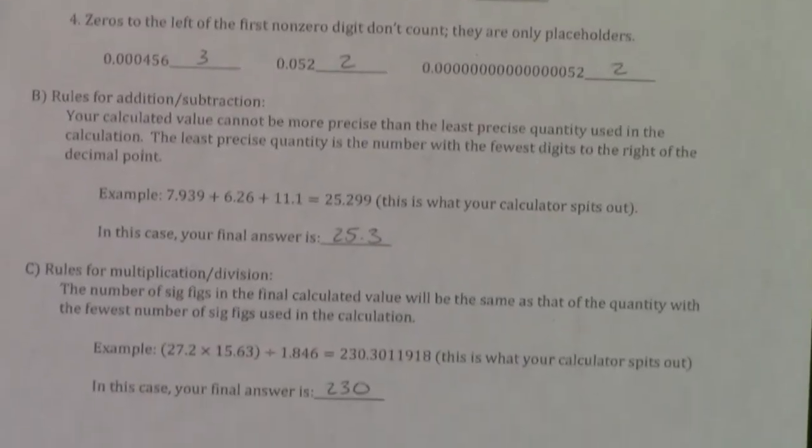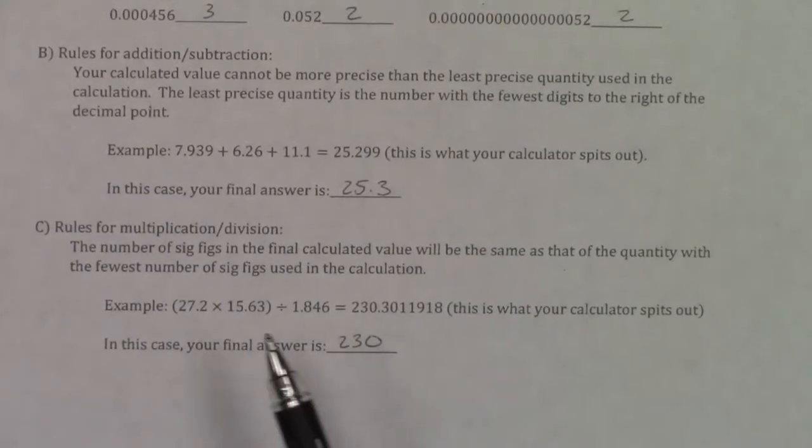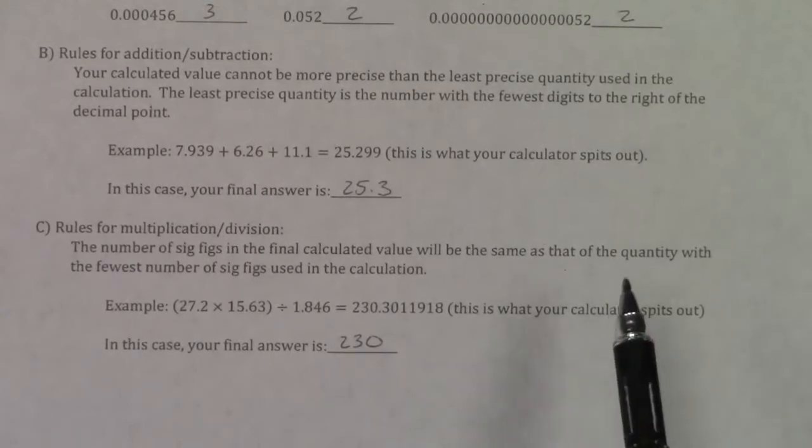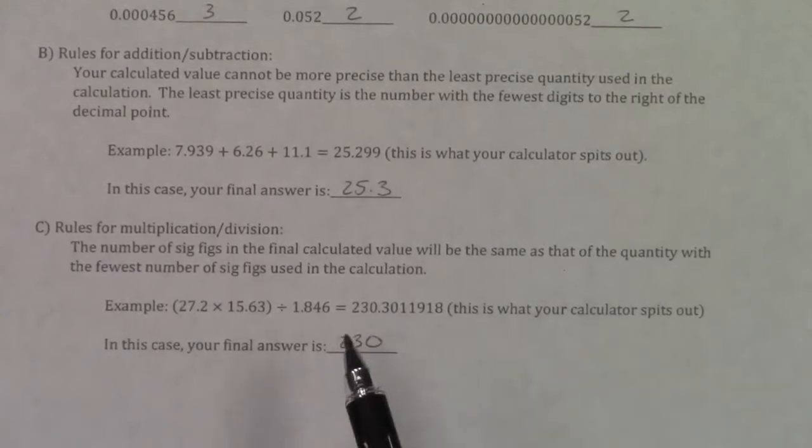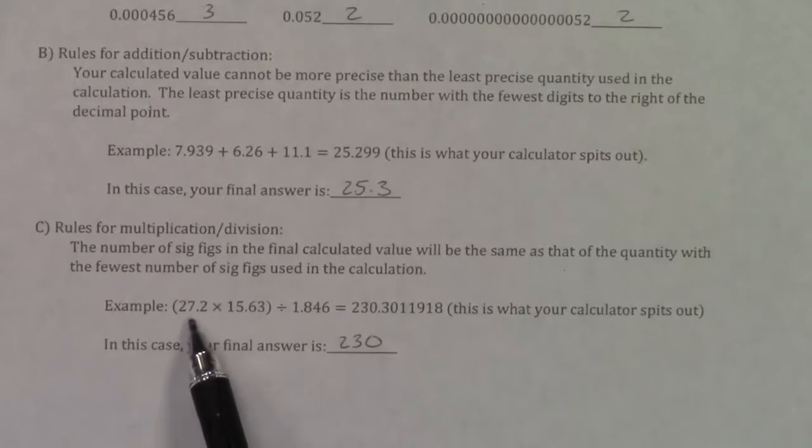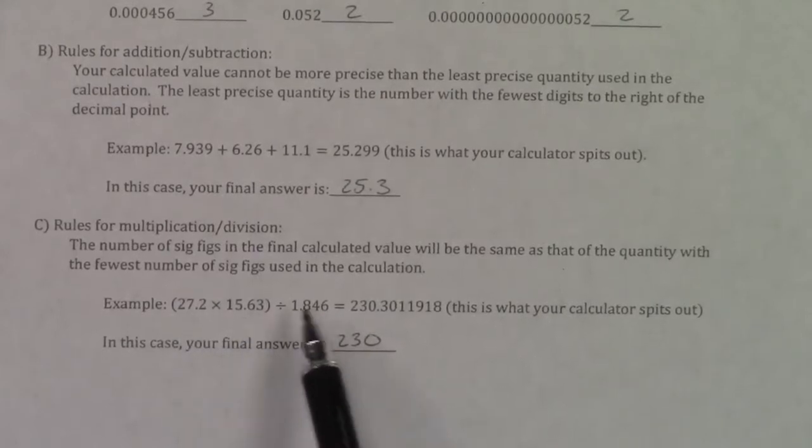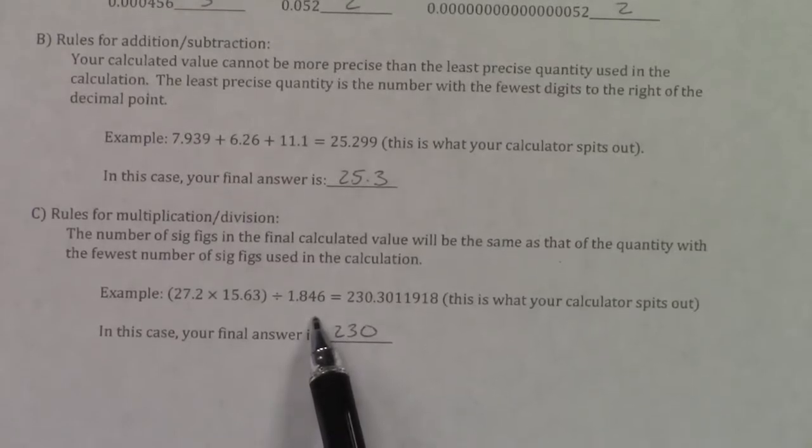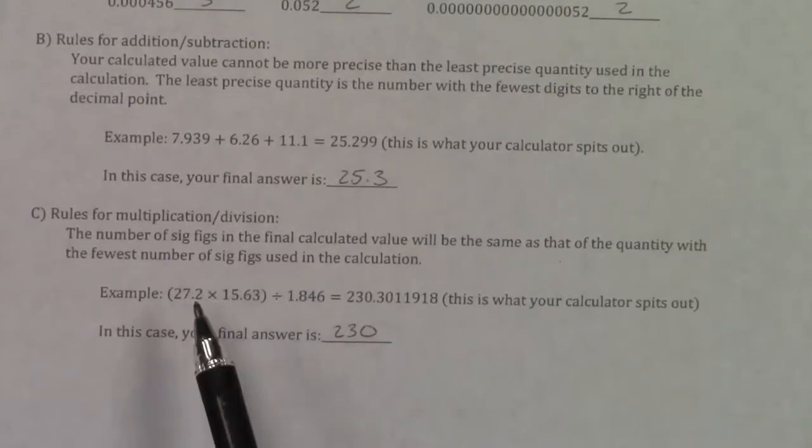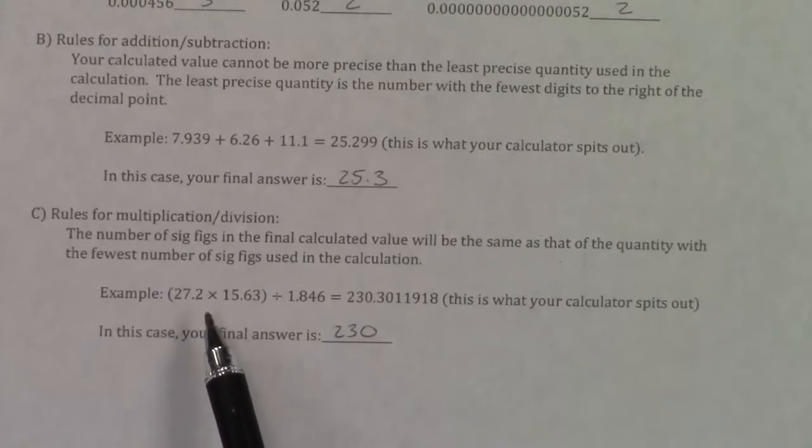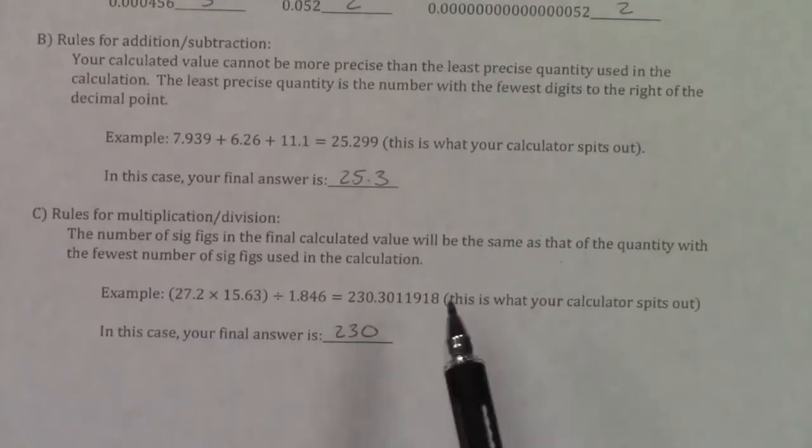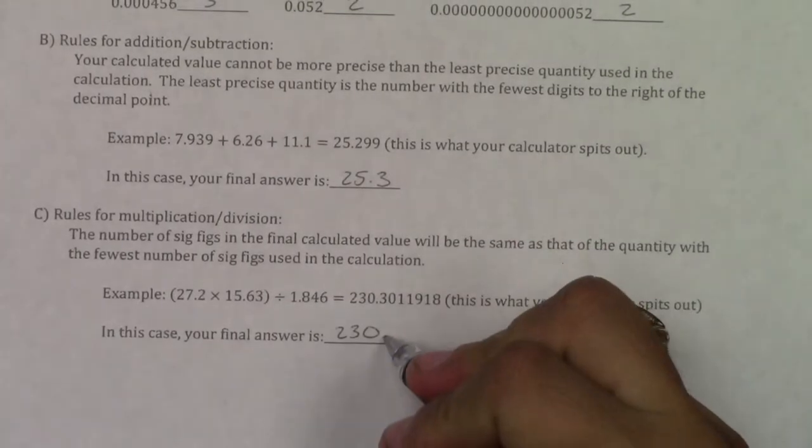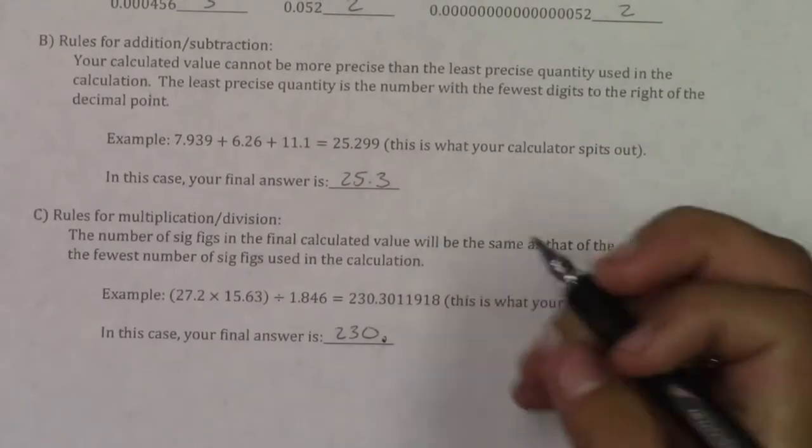But if you have multiplication and division, the number of sig figs in the final calculated value will be the same as the quantity with the fewest number of sig figs. So this is 3 sig figs, this is 4 sig figs, and this is 4 sig figs. Your final answer has to be with the fewest number of sig figs. You round to 3 significant figures, and actually this would be 230 with a decimal point.